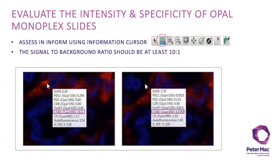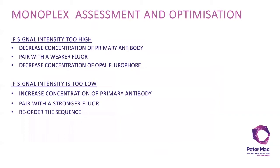When assessing the intensity and specificity of your Opal monoplex slides, use the inForm cursor shown in the images here. Move to an obviously positive cell and note the signal. In optimized assays, signal intensity on appropriate positive control tissue should fall in the range of 5 to 20 counts for all targets. Then move the mouse cursor to an area of non-specific staining and note the signal — the signal to background ratio should be at least 10 to 1. If signal intensity is too high, we recommend firstly decreasing the antibody concentration or pairing it with the weaker fluorophore. If this isn't sufficient, you may want to decrease the concentration of the Opal fluorophore. Conversely, a weak target signal can be improved by increasing the concentration of the primary antibody, pairing it with a stronger fluorophore, or alternatively moving the target to the end of the staining sequence as some epitopes become more accessible after extra cycles of antigen retrieval.